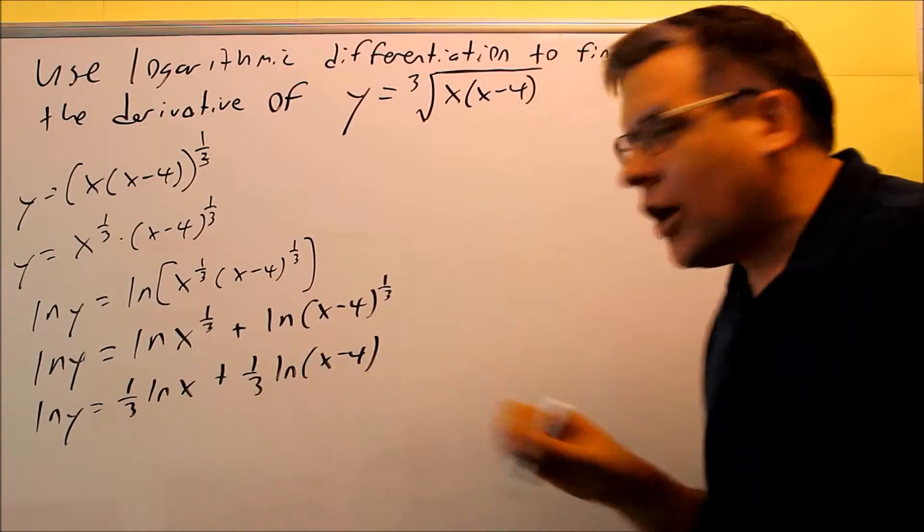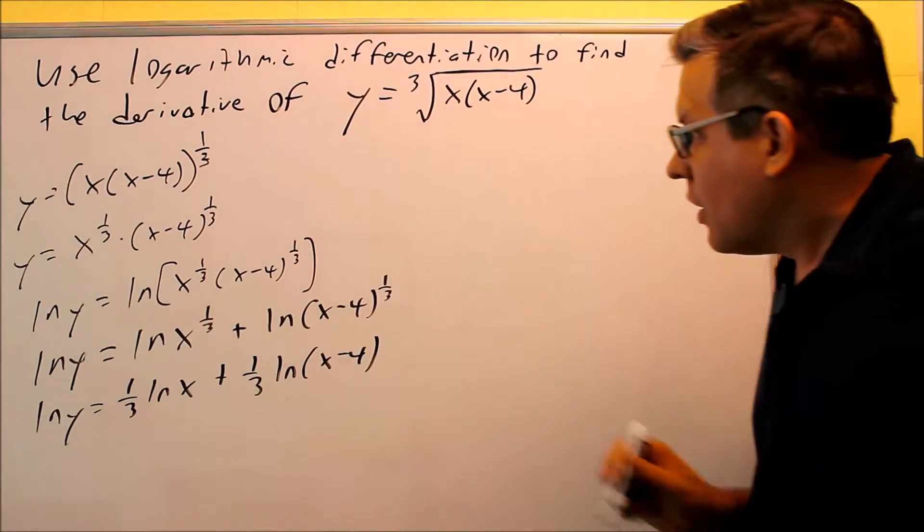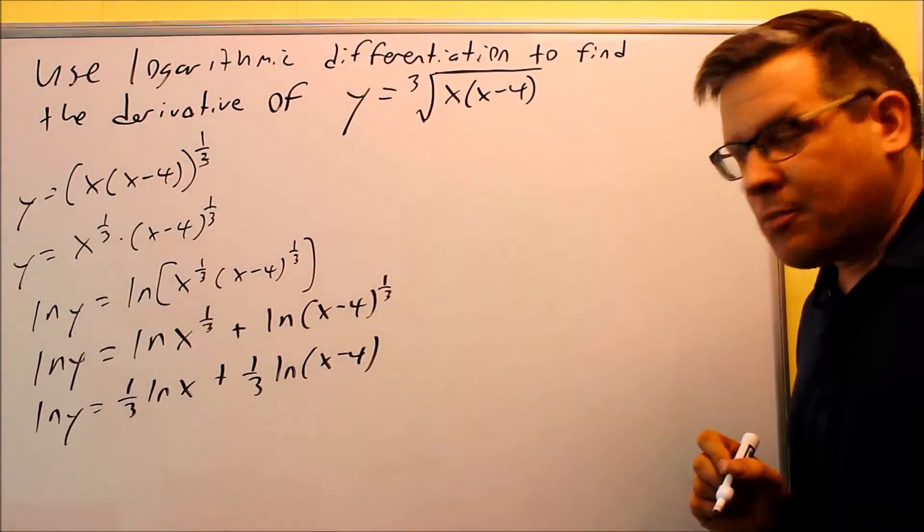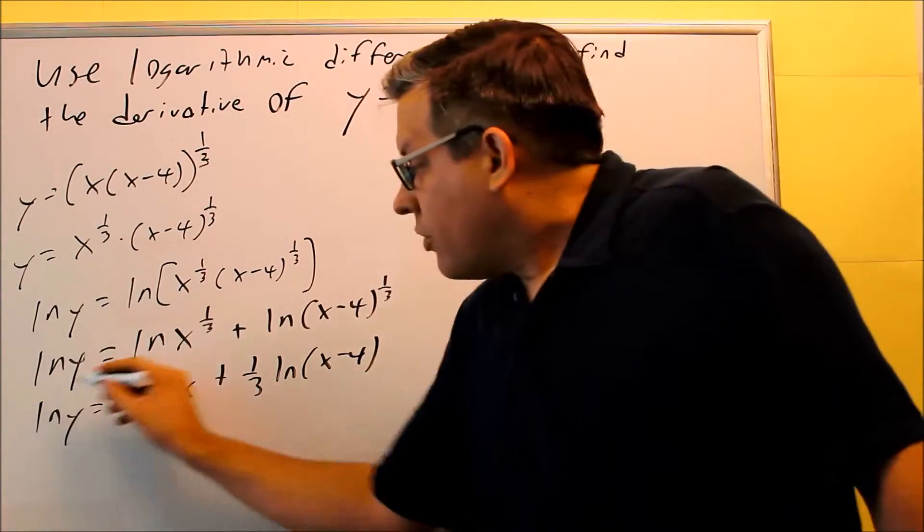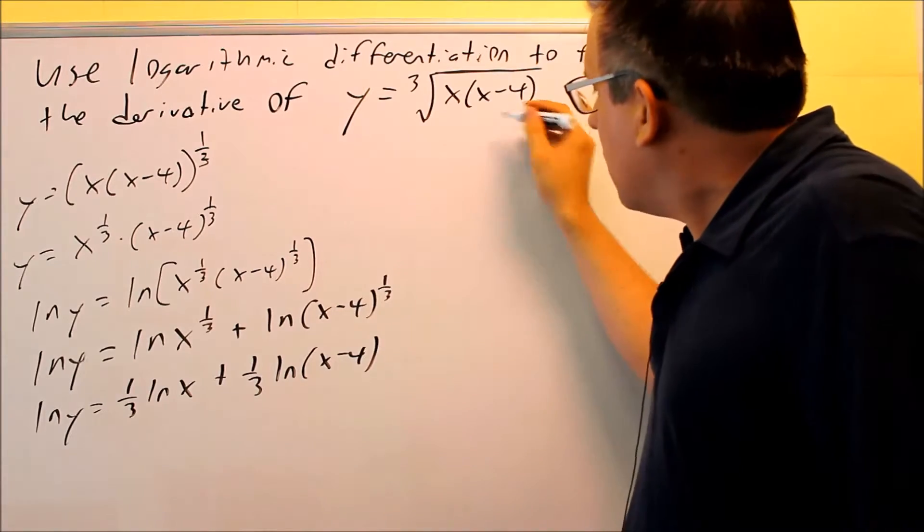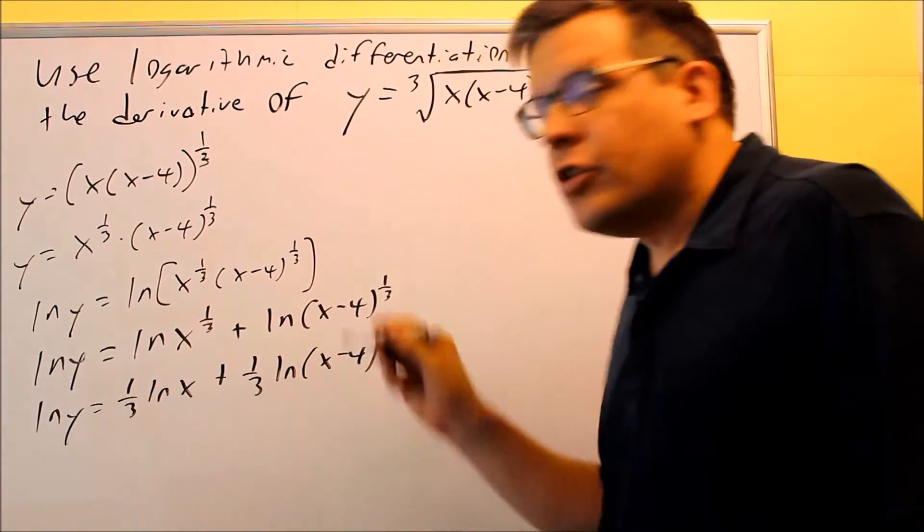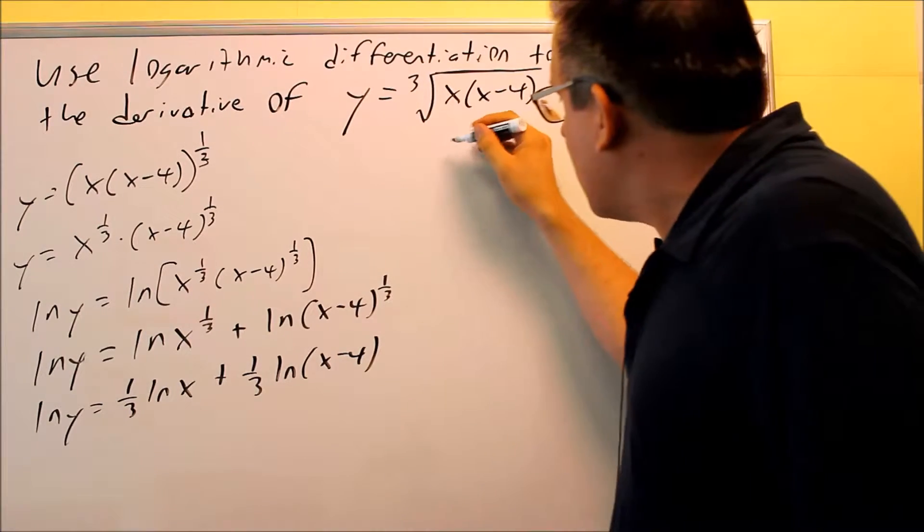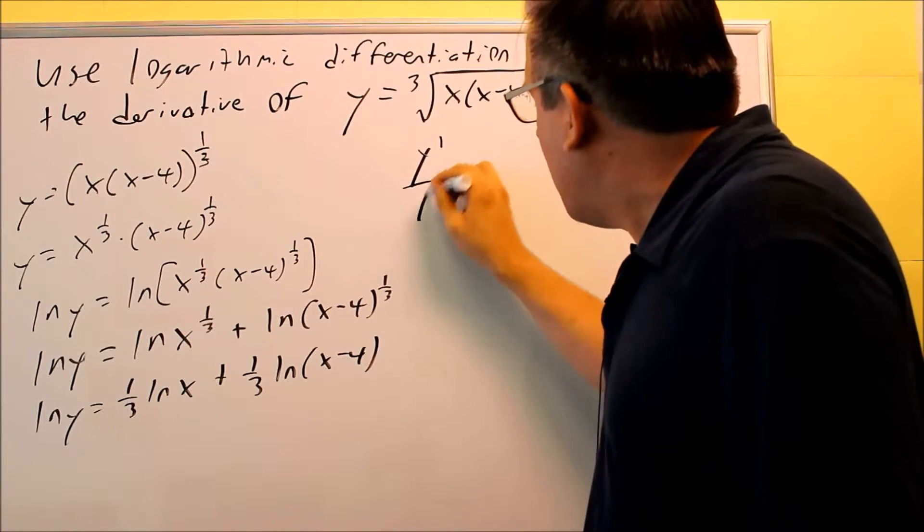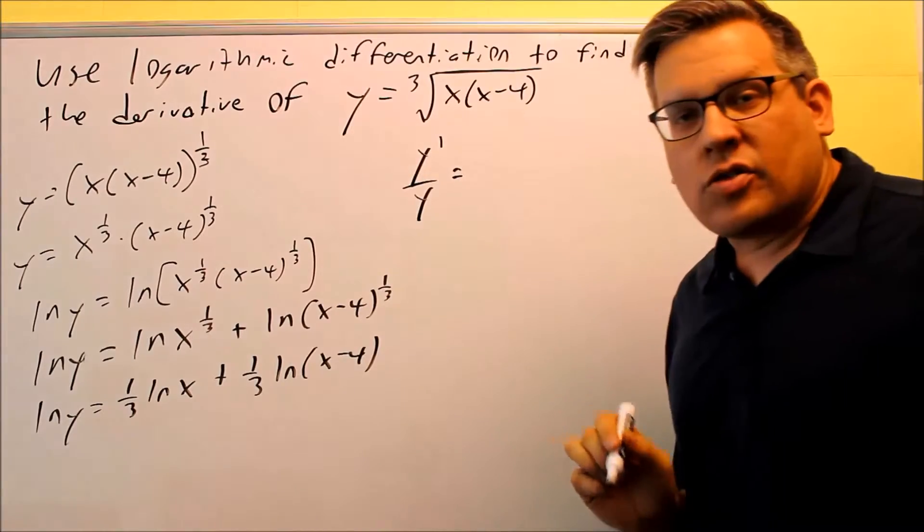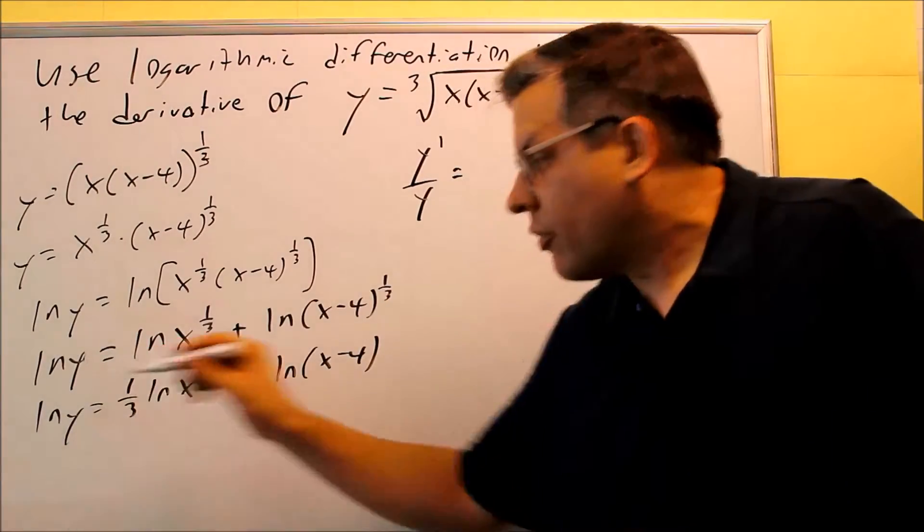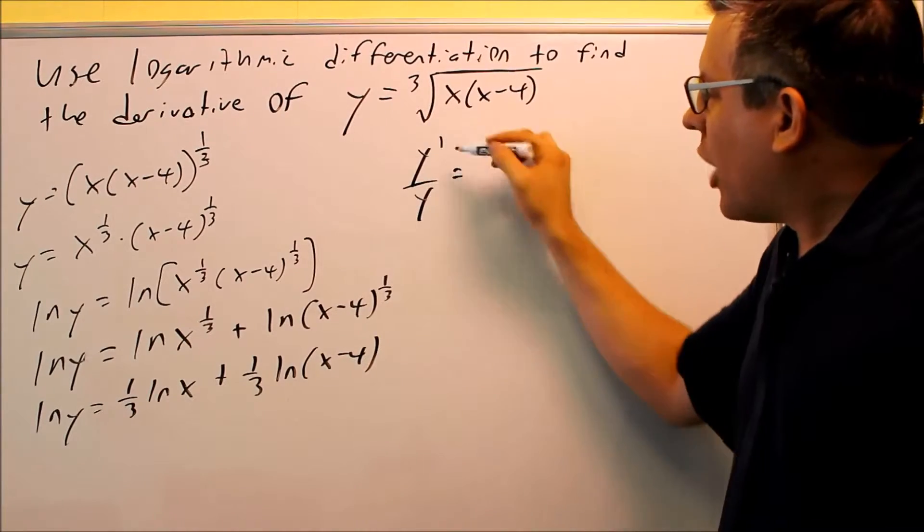So now what I'll do is I'm going to take the derivative of both sides of the equation. Let's look at the left-hand side. I want to do the derivative of ln y. The way that works is I'm going to use the property u prime over u. In this case I have a y there, that means that derivative is going to be y prime over y. So instead of u prime over u, I have y prime over y. That's the derivative of the left-hand side.